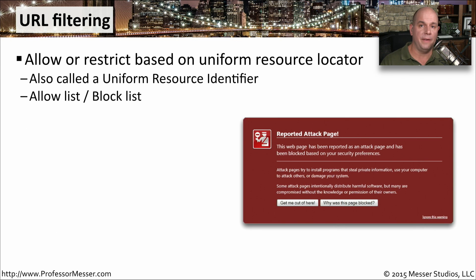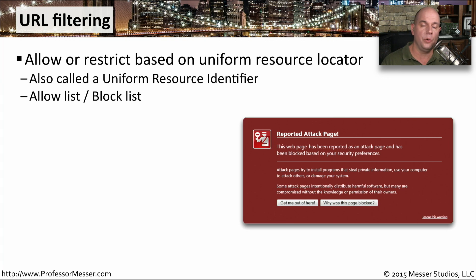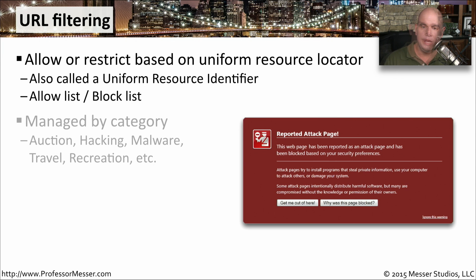A very common type of access list in a content filter is a URL, which stands for Uniform Resource Locator. You might also hear it referred to as a URI, or Uniform Resource Identifier. These URL filters are designed to allow or block based on what the URL happens to be — that's the only content being evaluated, which is what's in the address bar being sent out.